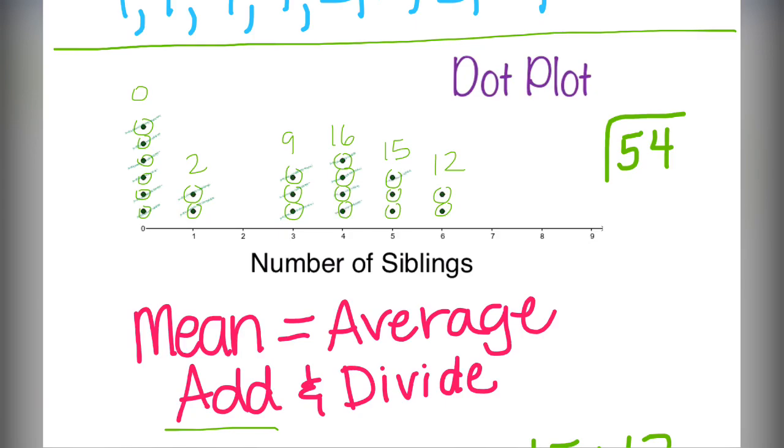The quickest way to do that, count up all the dots. How many pieces of data do I have? Oh that's right, we had twenty pieces of data or twenty people were surveyed so we divide by twenty and we get two point seven.